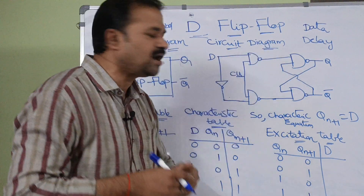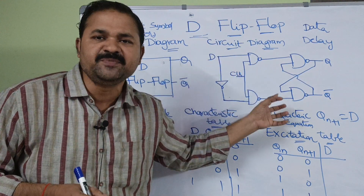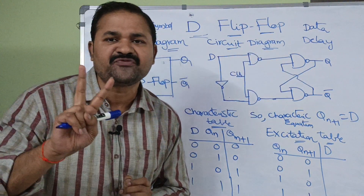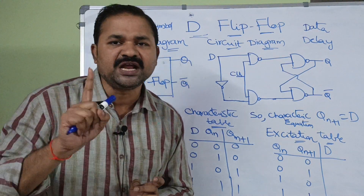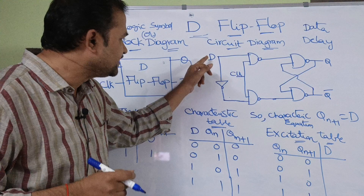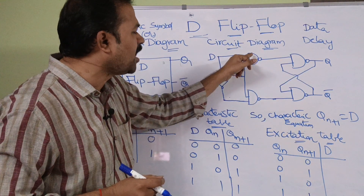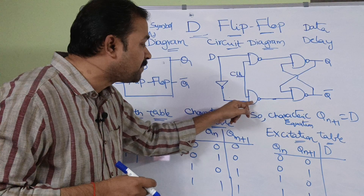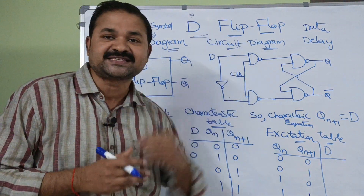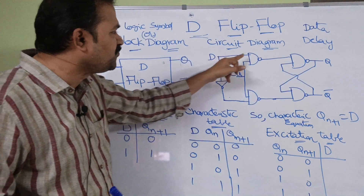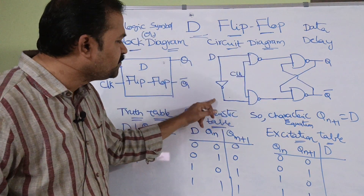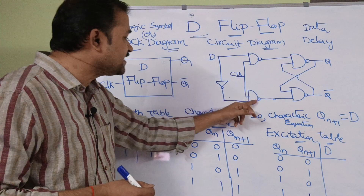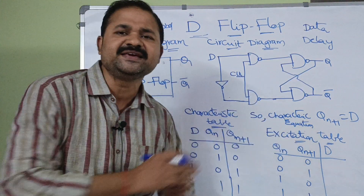Next let us see about the circuit diagram. The circuit diagram is similar to the SR flip-flop, but instead of having two inputs we need only one input, that is D. This D input will be applied to the first NAND gate, and the complement of D will be applied to the second NAND gate. In SR flip-flop, S input is applied on one NAND gate and R input on the other, but here the first input is D and the second input is complement of D.